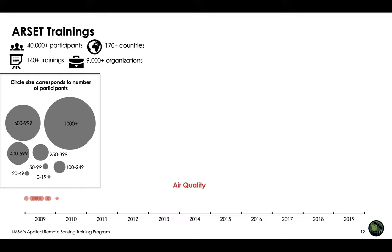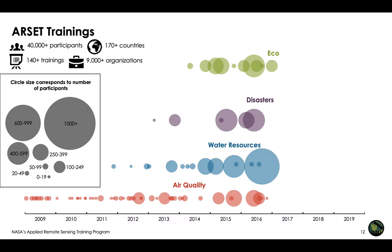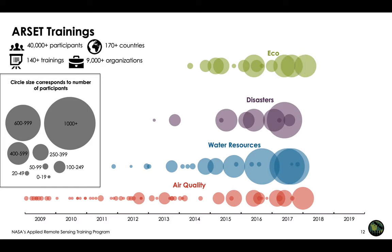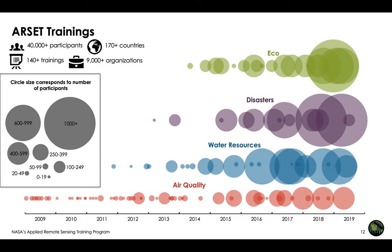ARSET is now in its 11th year of providing remote sensing training to increase the use of earth science in decision making. Over the past 11 years, ARSET has trained over 40,000 participants from over 170 countries and conducted over 140 trainings in air quality, water resources, land, and disasters. The circles in the graph correspond to the number of participants attending each ARSET training. The past few years have seen a marked increase in the number of participants. We are delighted to offer high quality trainings and hope you would join the ARSET listserv to learn about upcoming trainings.